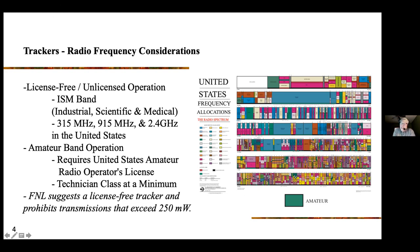For the First Nations Launch competition, we allow you to choose either band. But if nobody on your team has a ham license or is willing to get one, we recommend a license-free tracker that uses one of those ISM bands. The 250 milliwatt power limit comes from FCC rules, but generally the commercially available units won't exceed that.